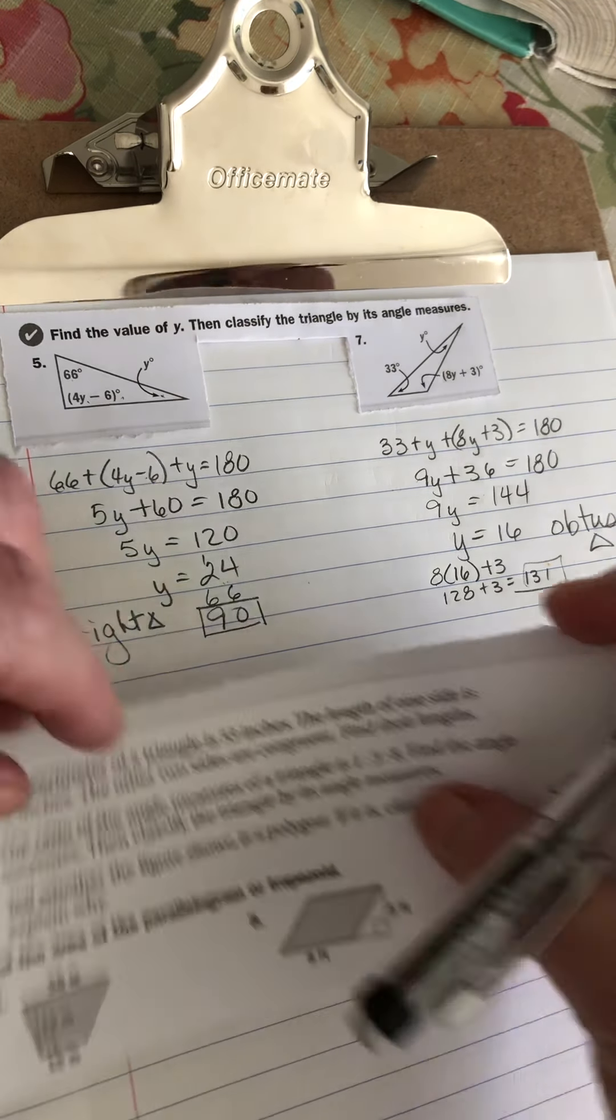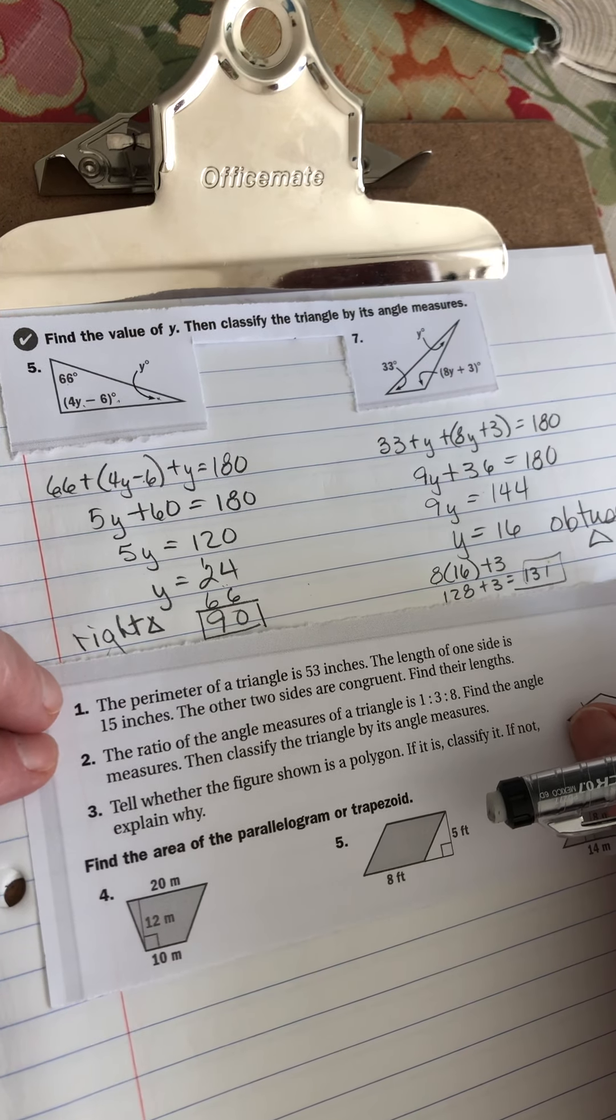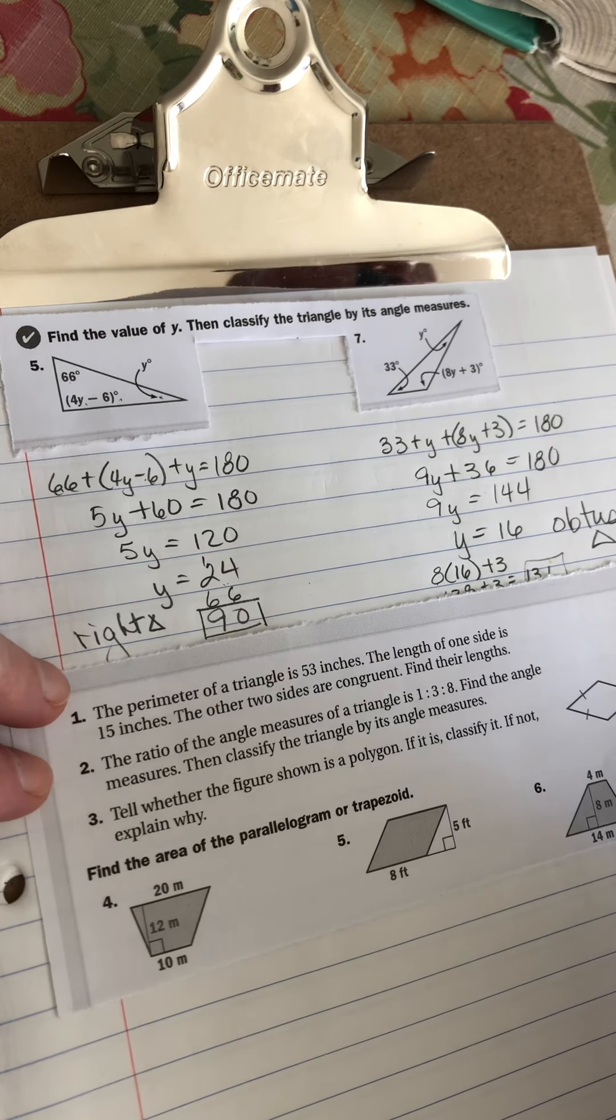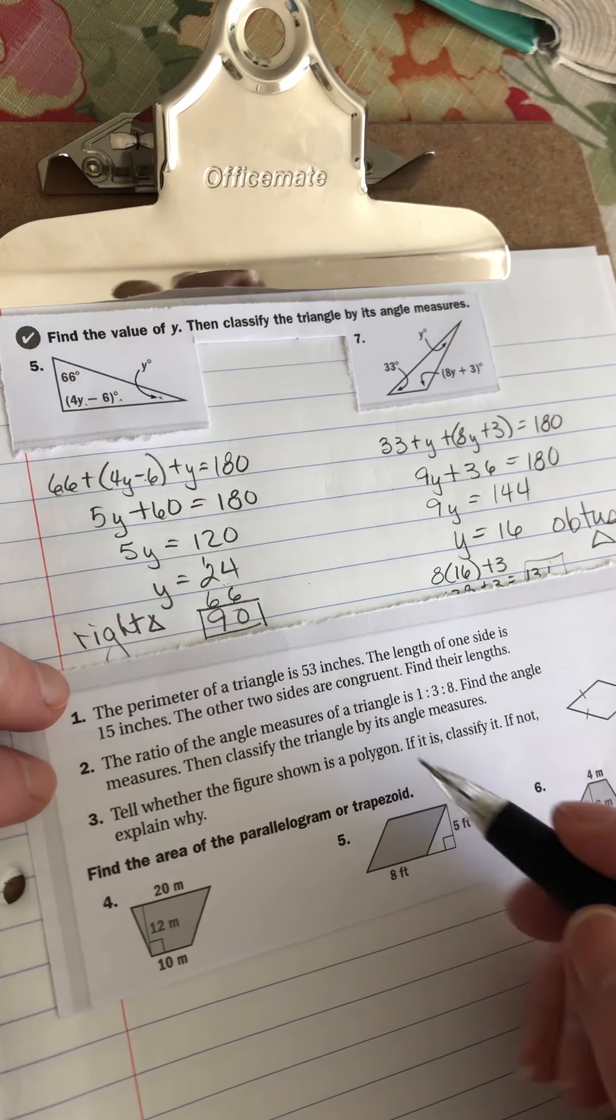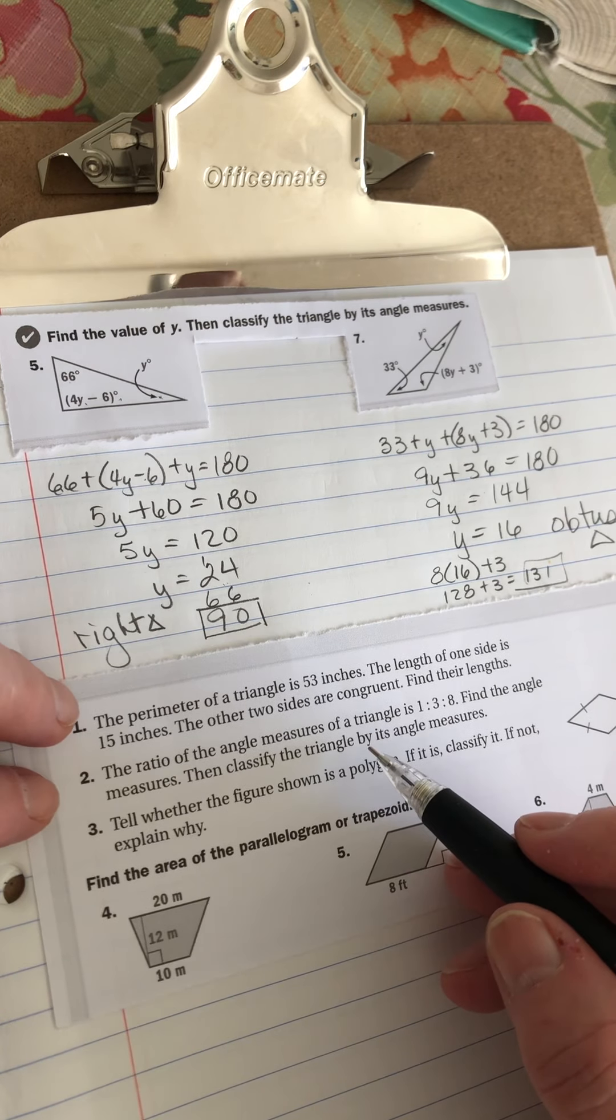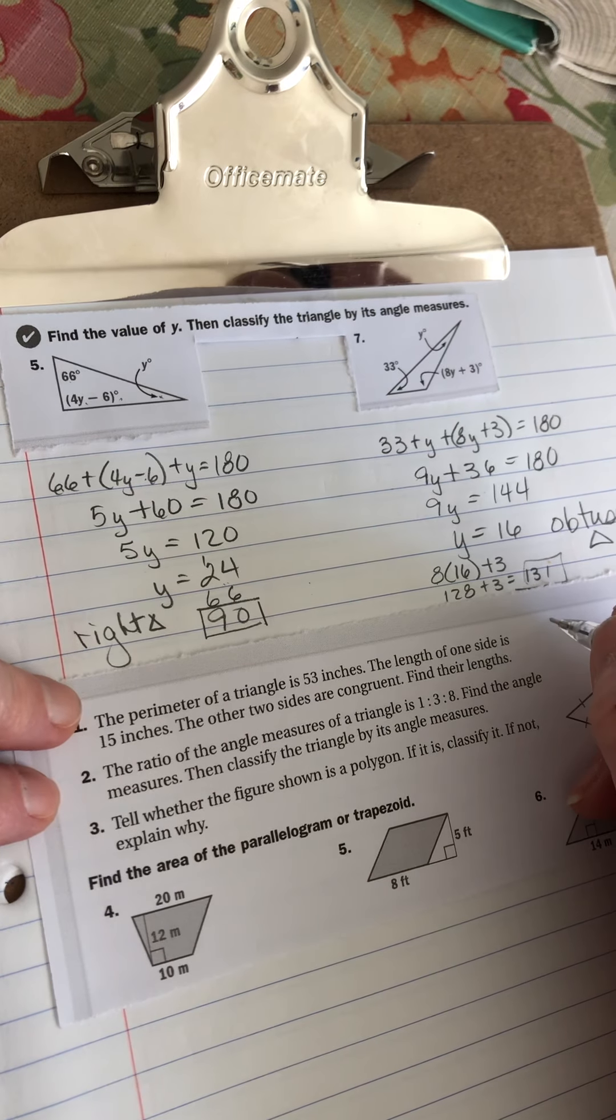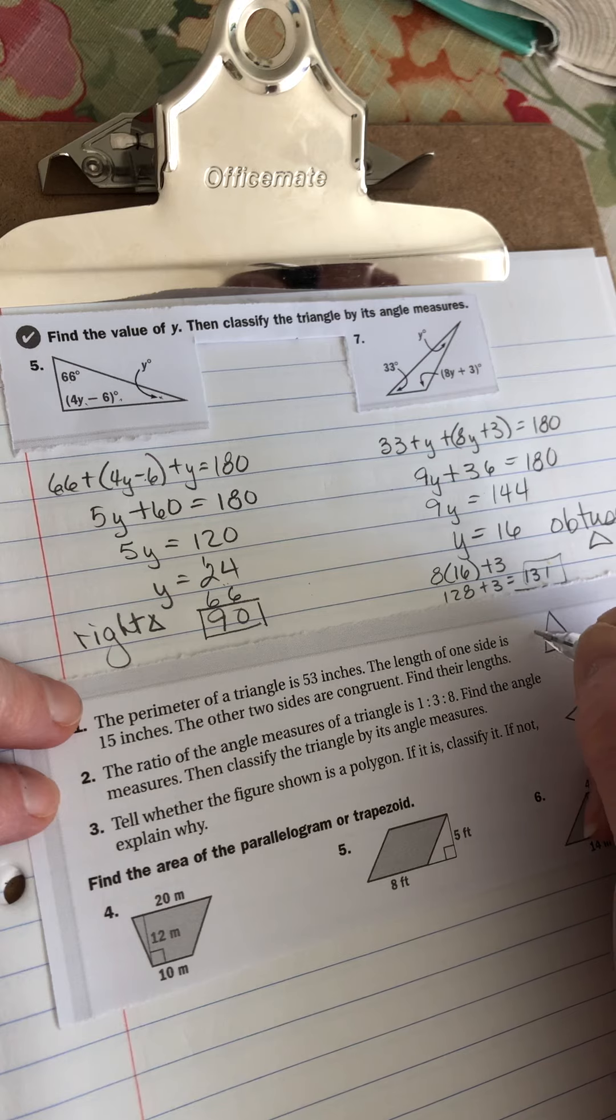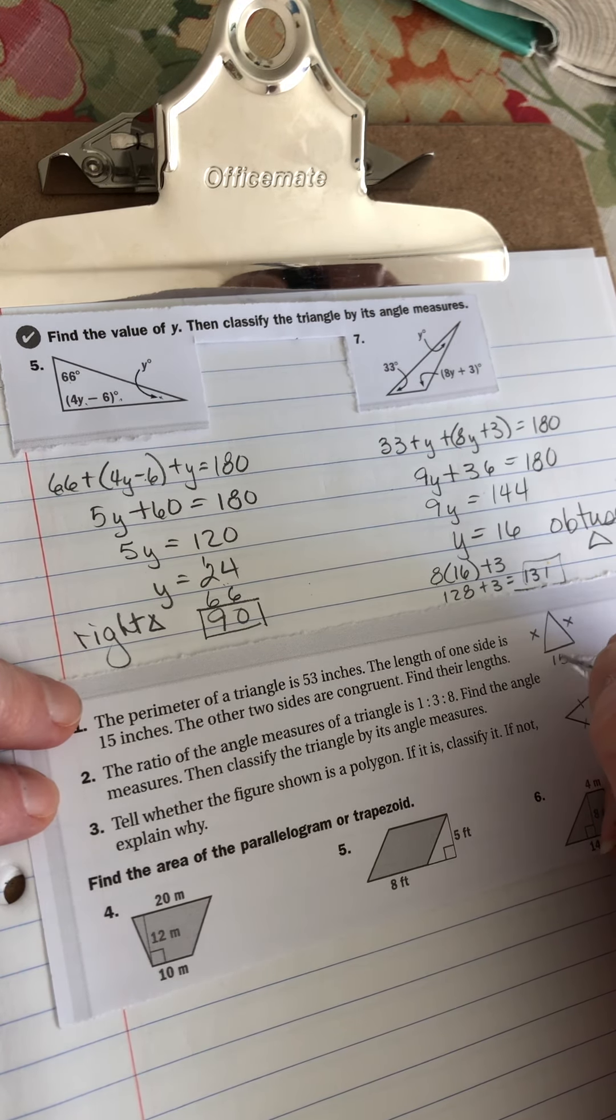Now I pulled some from the practice test and I don't know if you can read those or not, but I'll read it out loud. It says the perimeter of a triangle is 53 inches. The length of one side is 15 inches. The other two sides are congruent. So it's isosceles. Find their lengths. I always find it helpful to draw a picture. Two sides are the same. So I'm going to call them x because I don't know what they are. The other side is 15.